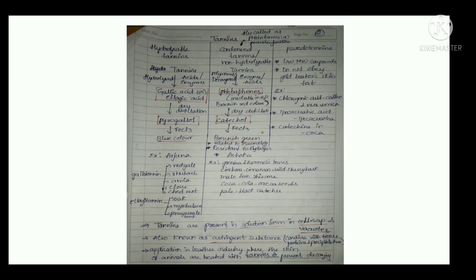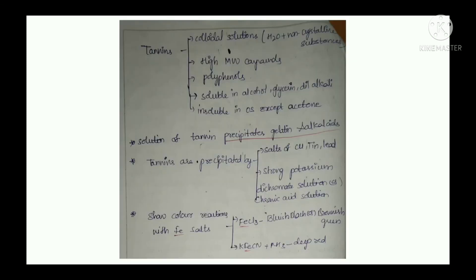They are used for checking small hemorrhages and also in leather industry where the skin of animals is treated with tannins to prevent decaying. Tannins are colloidal solutions, meaning they are non-crystalline substances and they are high molecular weight compounds, whereas pseudotannins are low molecular weight.